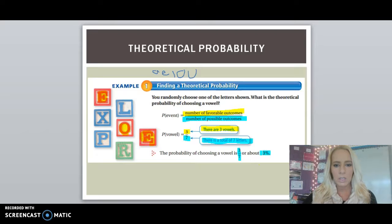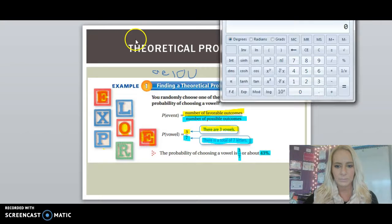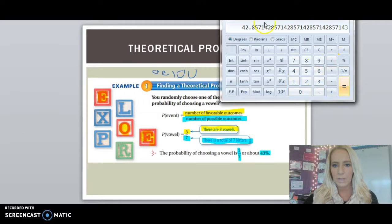Going back to the likelihood of something happening, this is close to something that is equally likely. Now, to convert from fraction to percent when calculating theoretical probability, divide numerator into denominator. So in this case here, three divided by seven and then times 100 is about 43%. The eight rounds the two up to about 43%. Now let's look at a couple more examples.